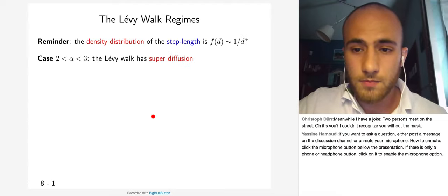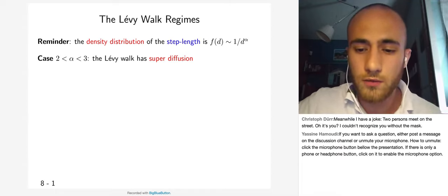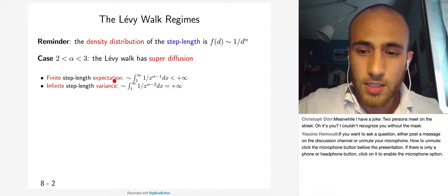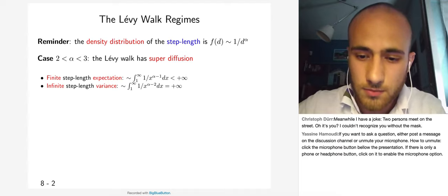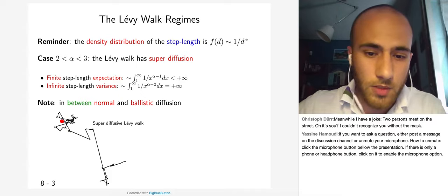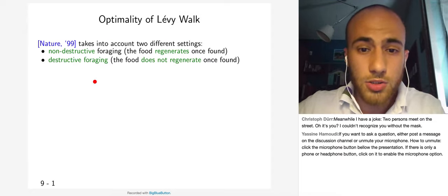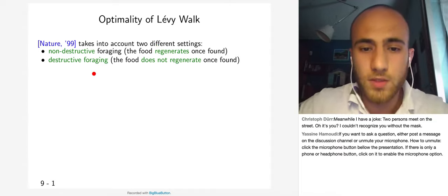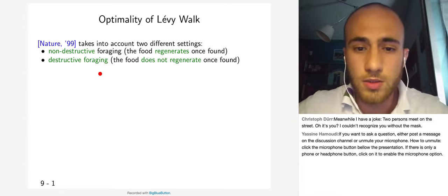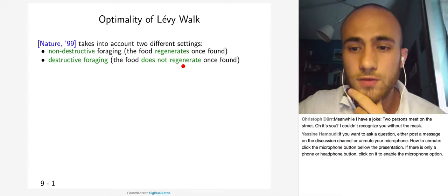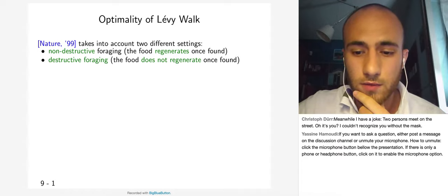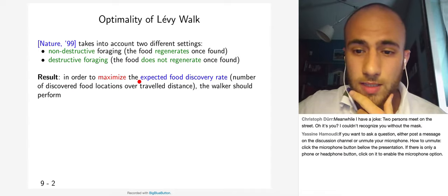When alpha is between 2 and 3, the Lévy walk has super diffusion — somewhere between normal and ballistic diffusion — with finite step length expectation but infinite step length variance. The Nature 1999 paper considers two settings: non-destructive foraging, where food regenerates once found, and destructive foraging, where food does not regenerate once found.